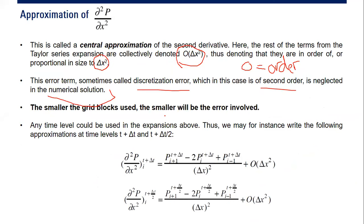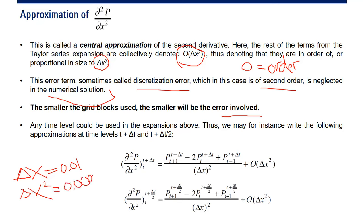The smaller the grid blocks used, the smaller will be the error involved. For example, if delta x is 0.01, then delta x squared is 0.0001, so the error is very very small and we can neglect it. That's why for simulation, the smaller the grid the better — smaller grids mean more detail and smaller error. Any time level could be used in the expansion form.